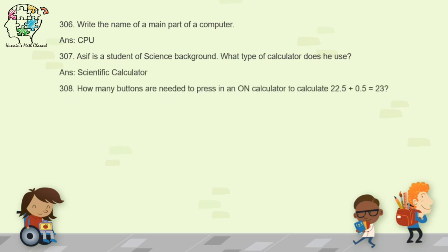Question 308: how many buttons need to be pressed to calculate 22.5 plus 0.5 on a calculator? Do not count the result display — only count up to the equals sign. For 22.5 you press 4 buttons, then plus makes 5, then 0.5 adds 3 more for 8, then the equals button makes 9 total. So 9 buttons need to be pressed.